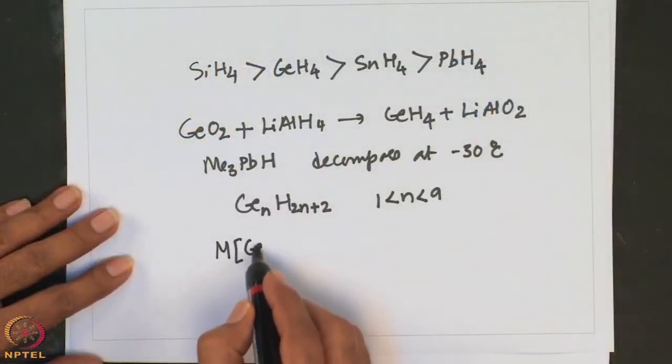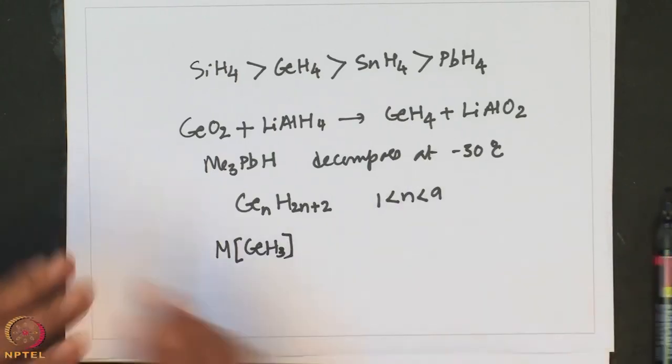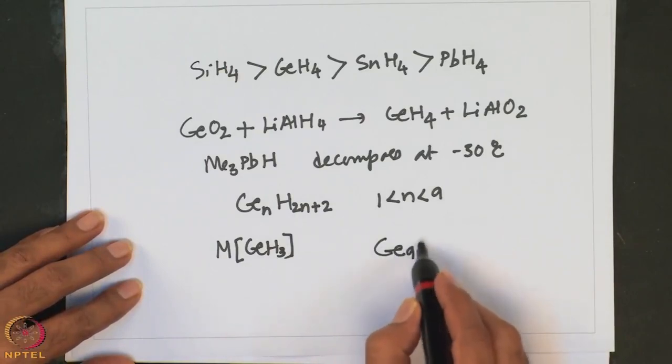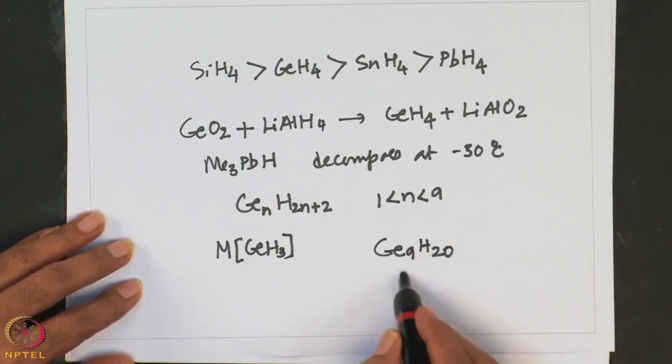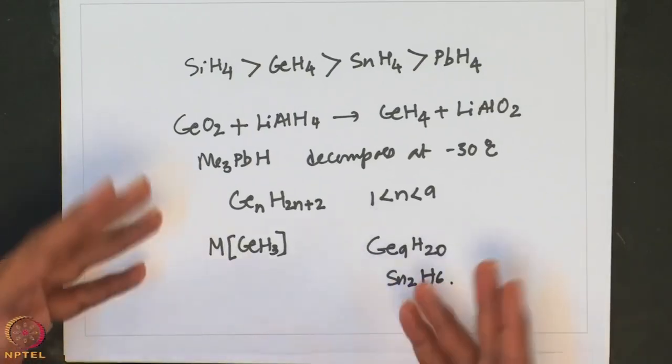Reactions between germane and alkali metals are similar to those described with silicon — they form analogous salts with alkali metals. Ge9H20 is known for germanium. In the case of tin, only Sn2H6 is known, and the Sn3 analog is not known. Sn2H6 is also very unstable.